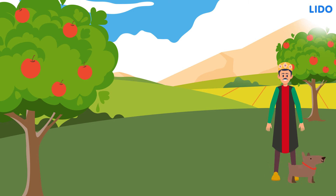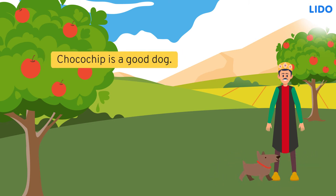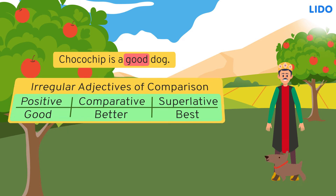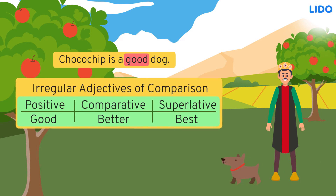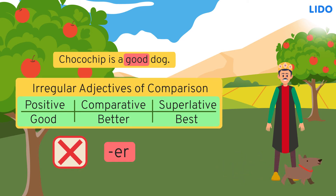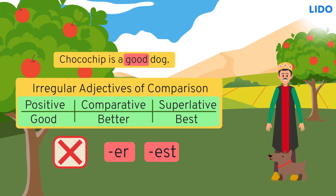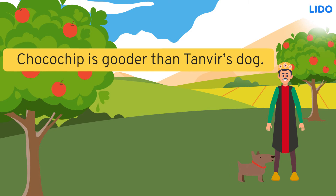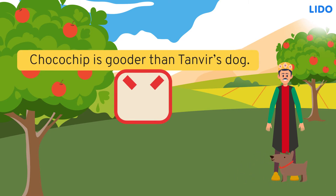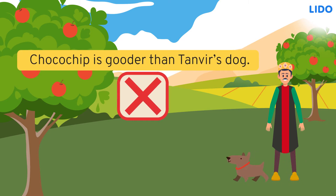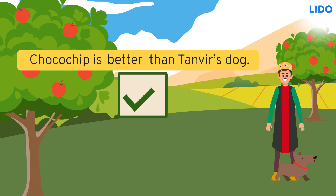For example, 'good' is the positive degree. Chocochip is a good dog. But we don't add ER or EST to it to show the comparative and superlative degree. We don't say Chocochip is 'gooder' than Tanvir's dog — we use the word 'better'. Chocochip is better than Tanvir's dog.